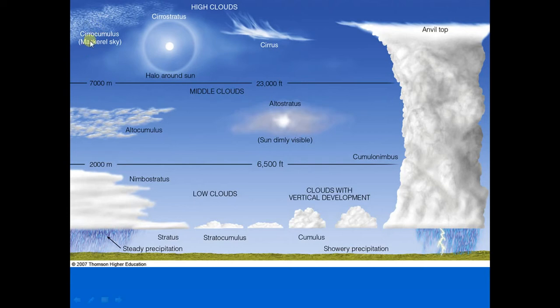Cirrostratus clouds are so thin that the sun and moon can be clearly seen through them. Cirrostratus clouds often produce a halo — a circular ring of light around the sun or moon. Sometimes cirrostratus are so thin that the only way you can see them is when they form a halo around the sun or moon, especially at nighttime.